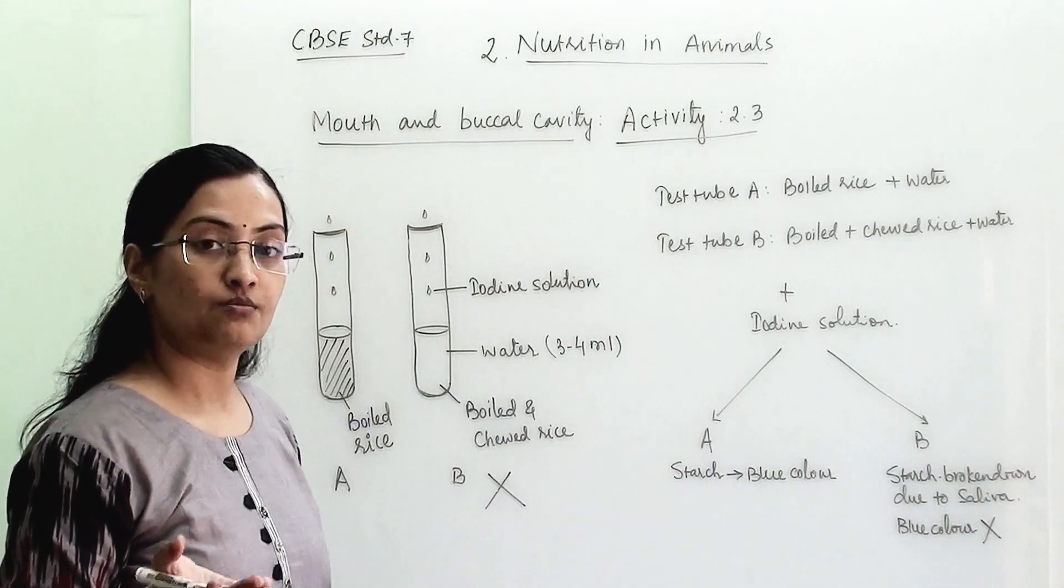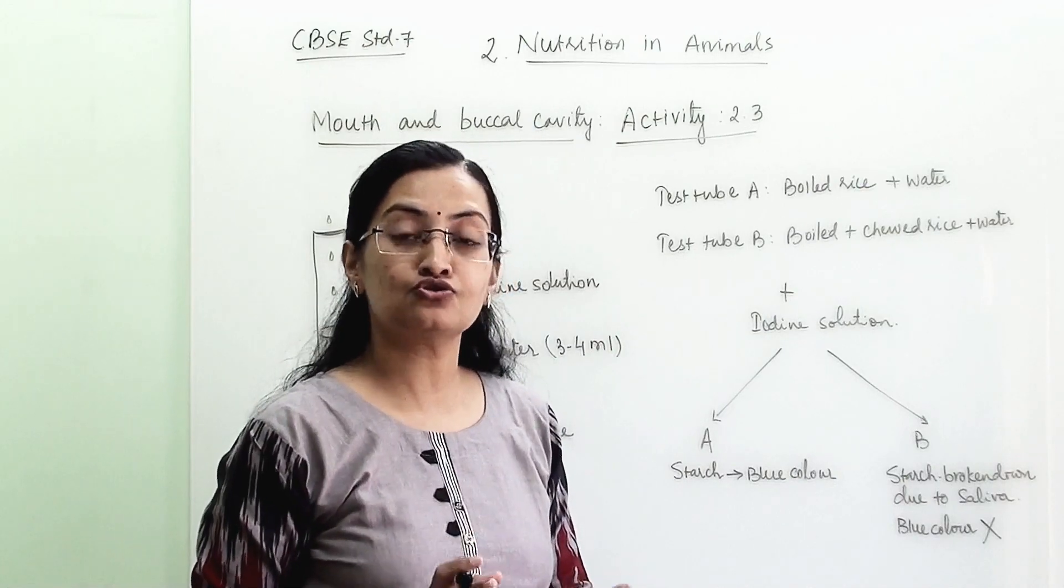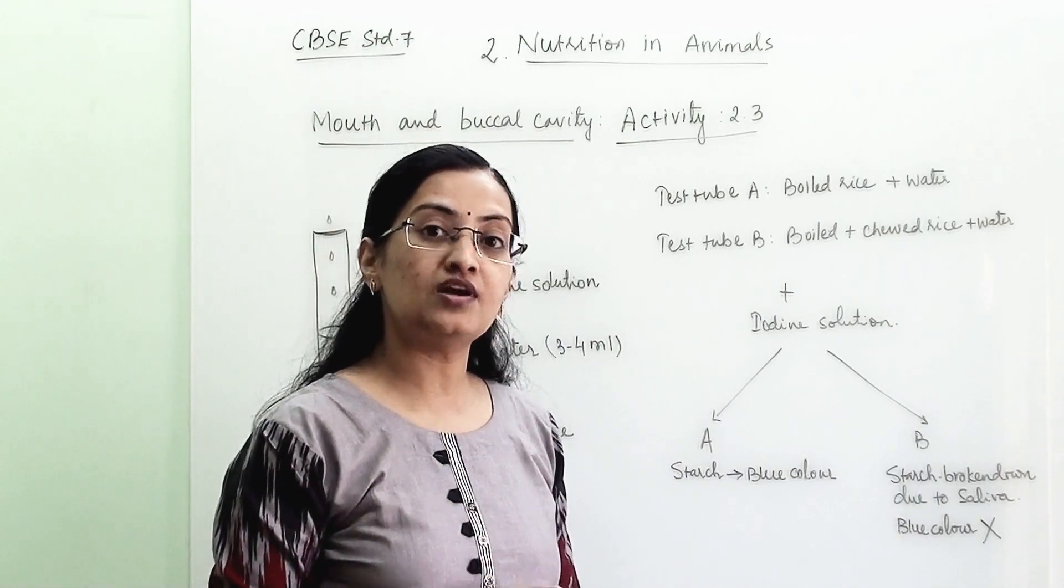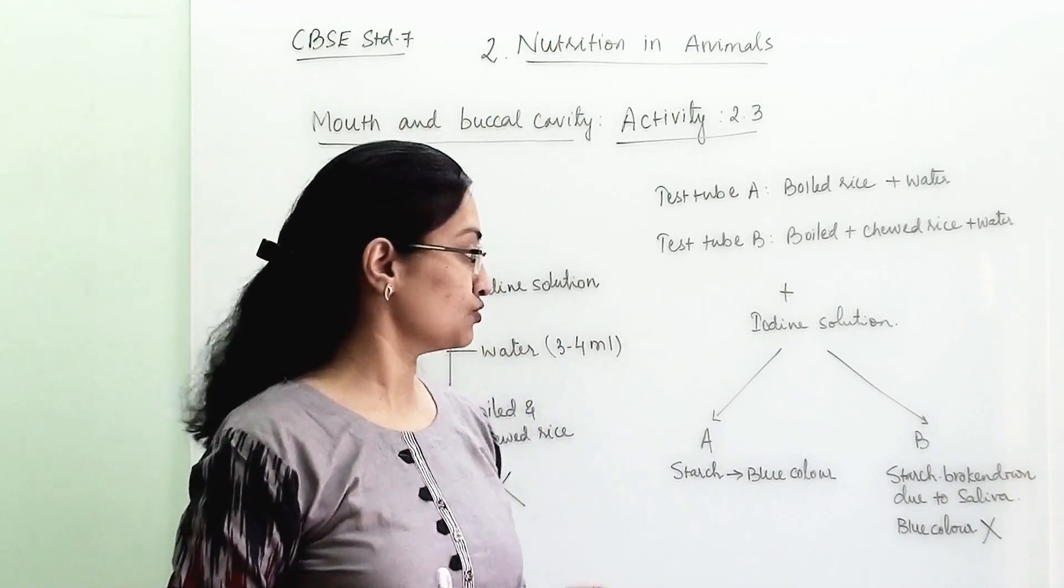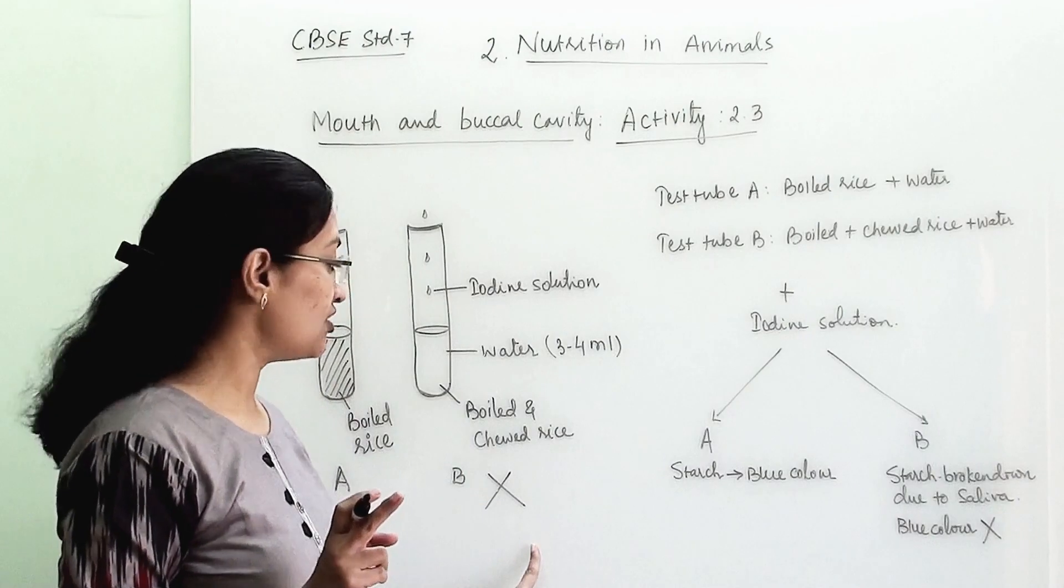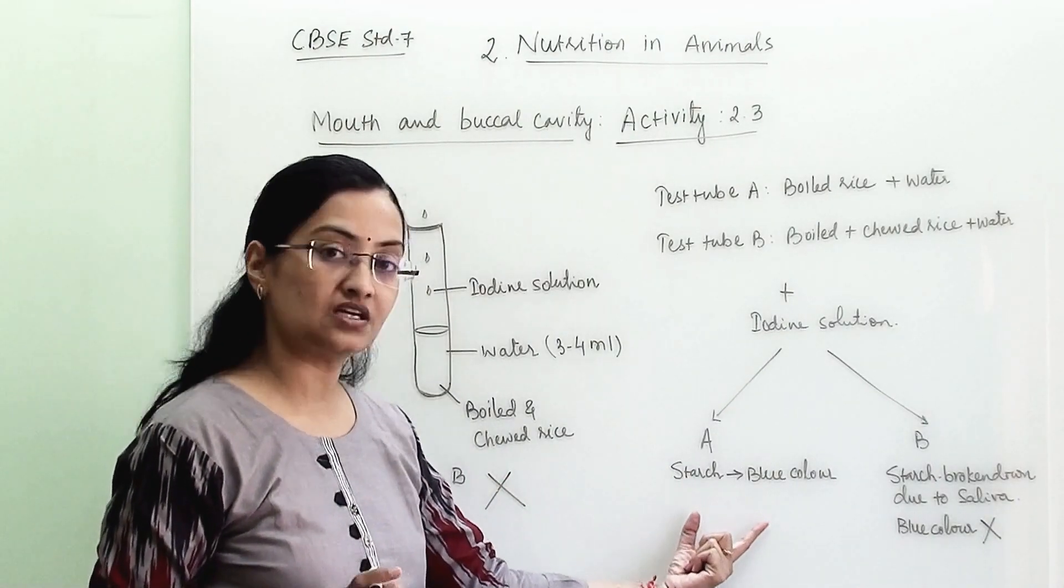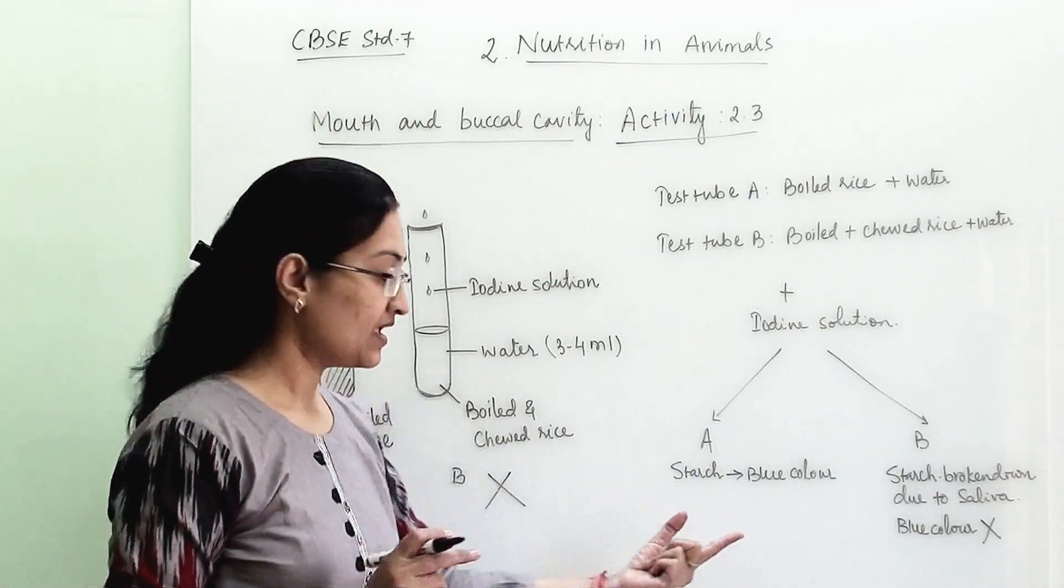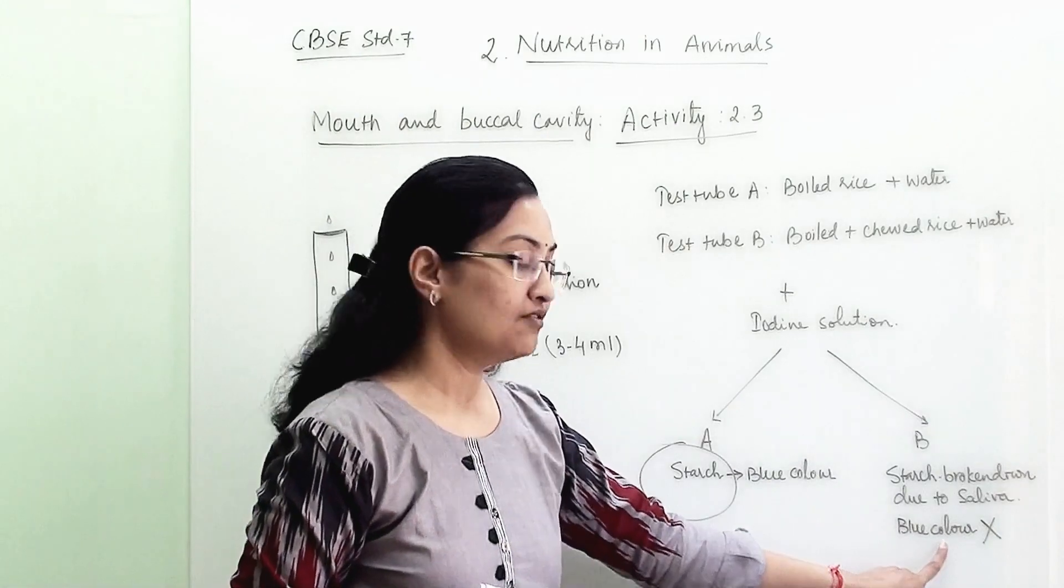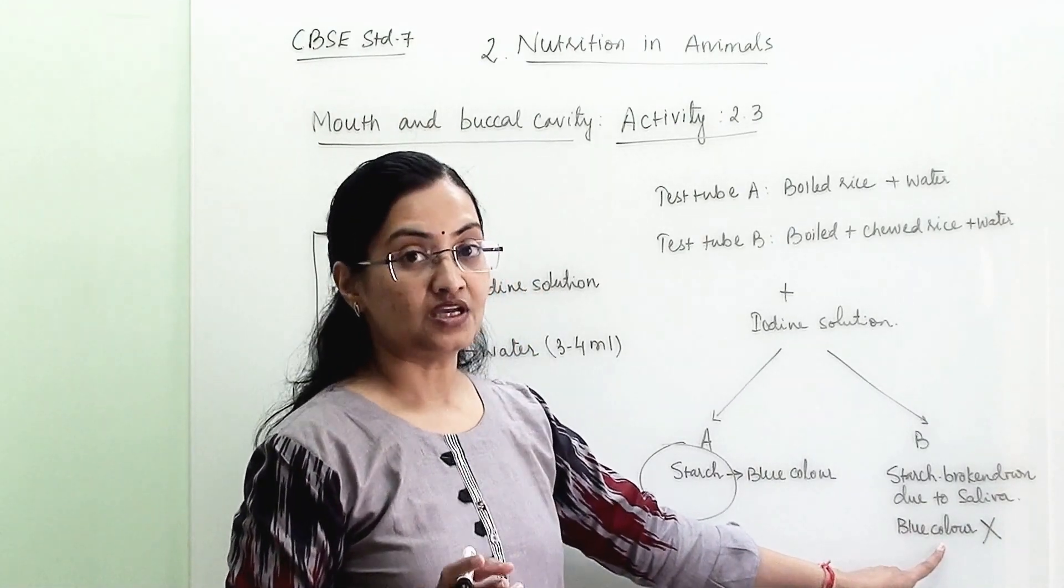Whatever starch is there in the chewed rice has been converted into simple sugar because our saliva, which is one type of enzyme, is also known as salivary amylase. That has converted starch into simple sugar. So there is no starch in test tube B. We will not be able to see any color change in test tube B, whereas we will be able to see the color change in test tube A, in which we can see the presence of starch.